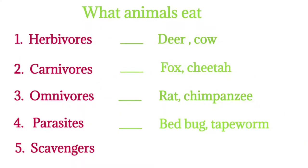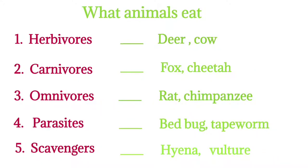Fifth, scavengers. Animals that eat the flesh of dead animals are called scavengers. Examples: hyena, vulture, hawk, etc.